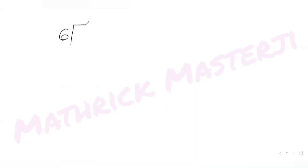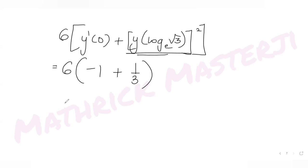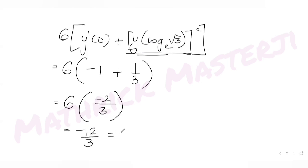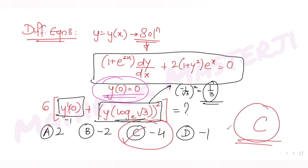Putting it all together: 6·y'(0) + [y(log√3)]² = 6·(-1) + 1/3 = -6 + 1/3 = (-18 + 1)/3... simplifying: 6·(-1) + 1/3 = -6 + 1/3, which gives -12/3 + 1/3 = ... the result is -4. This matches option C.